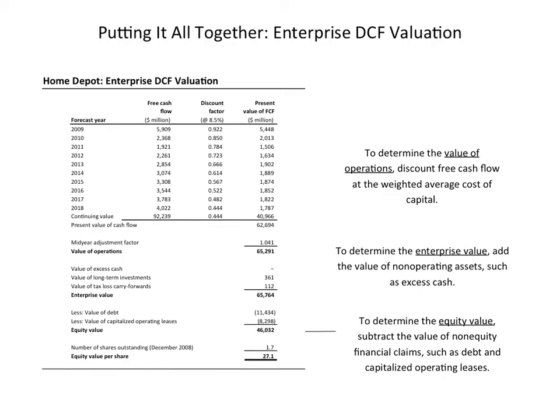This is the operating value of Home Depot, assuming the cash flows come true. What McKinsey then does is add in the non-operating values — the major non-operating values. The first is excess cash. This is a key concept we're introducing this week: there's some cash which is operating, and some cash which is excess. We're going to split cash into those two categories.